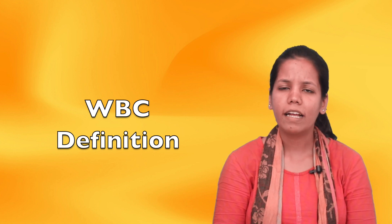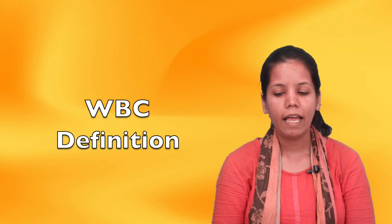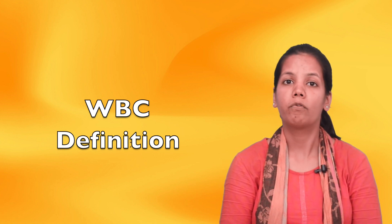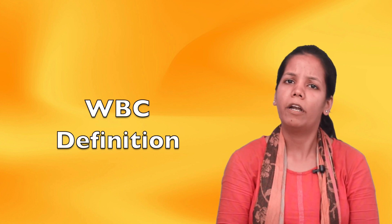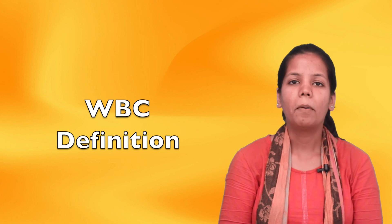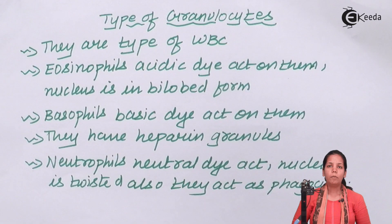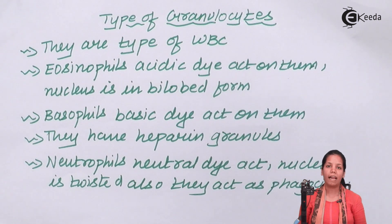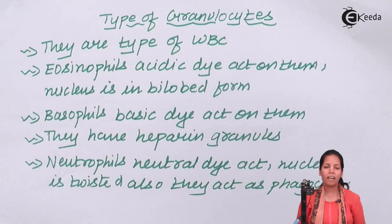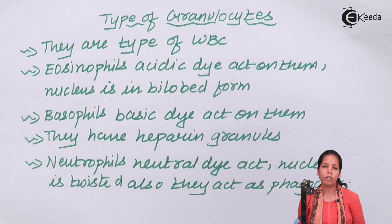Granulocytes are a type of WBCs and they contain granules and are amoeboid in nature. WBCs can be clearly distinguished into two different kinds: granulocytes and agranulocytes. Granulocytes are amoeboid in nature and have a lobed nucleus, whereas agranulocytes do not have such features.